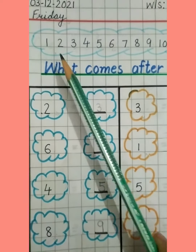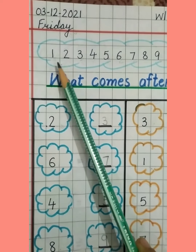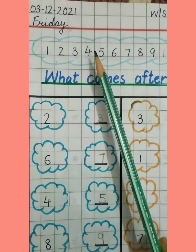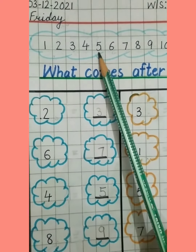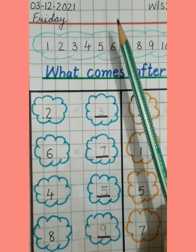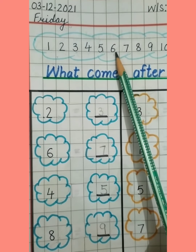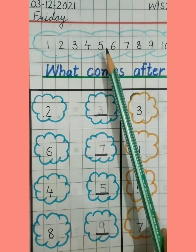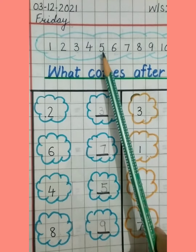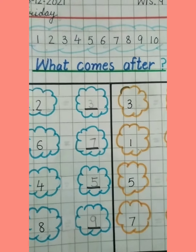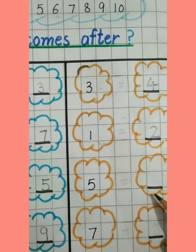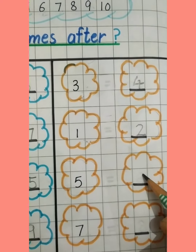1, 2, 3, 4, 5 — and after 5 is 6. 5 ke baad hamein kya likhna hai? 6. 5 ke baad 6 bolte ho na aap bhi. So we have to write 6 here.